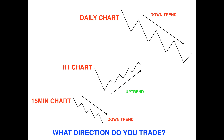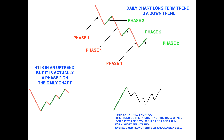If you can master this and understand what you need to do, this is where you're going to make money and have an edge in the market. On the daily chart, the long-term trend is a downtrend — we can see clear phase one, phase two, phase one, phase two, and two clear cycles. Currently the daily chart is in a phase two. If you look at the H1, it is showing an uptrend, but it's actually a phase two on the daily. If you understand that the H1 uptrend is really a phase two on the daily, you are already a few steps ahead of other retail traders.